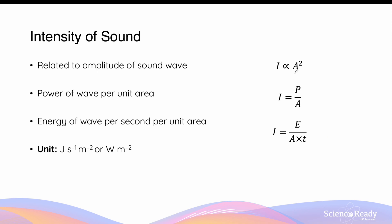As discussed in the introduction to sound waves, the amplitude of a sound wave is related to the volume or loudness of the sound. This means volume is also related to the intensity of sound. When a sound wave has a greater intensity it is louder and has a greater volume; vice versa, a lower intensity means a smaller volume and a quieter sound.